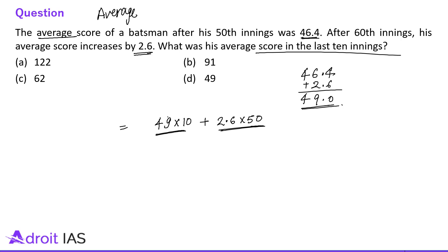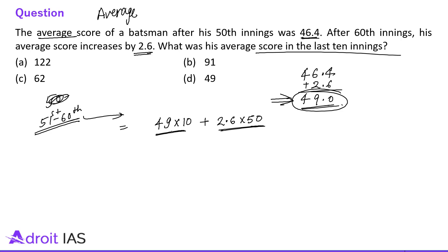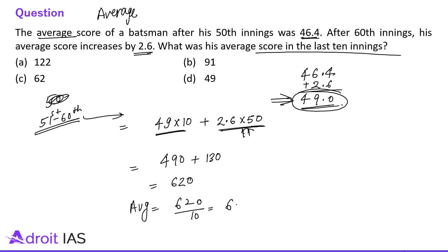From the 51st to 60th innings, he scored 49 for each of the last 10 innings — which is 490 — plus 2.6 into 50, which is 130. So for the last 10 innings he scored 490 plus 130 equals 620 runs. His average for the last 10 innings is 620 divided by 10, which is 62 runs.